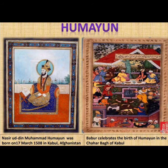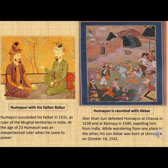Now we will read about the next ruler of the Mughal Empire, i.e. Humayun. Nasiruddin Muhammad Humayun was born on 17 March 1508 in Kabul, Afghanistan. Babar celebrated the birth of Humayun in the Chahar Bagh of Kabul. Humayun succeeded his father in 1531 as the ruler of Mughal Territory in India. At the age of 23, Humayun was an inexperienced ruler when he came to power.